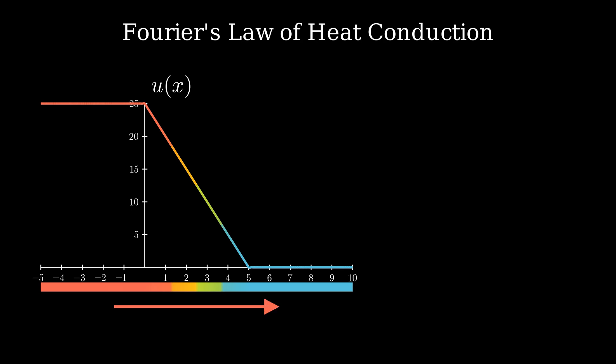Now, if the temperature on the left side was 15 instead of 25, heat would still move from left to right, but the amount would be reduced. So we can say that the heat flux is related to the temperature gradient, which is equal to the slope of this line, such that it's directly proportional to the negative temperature gradient.